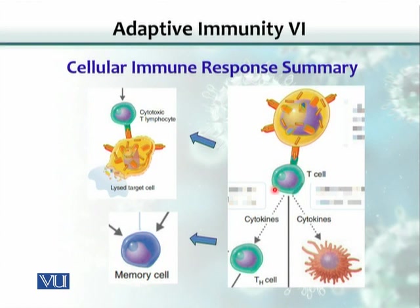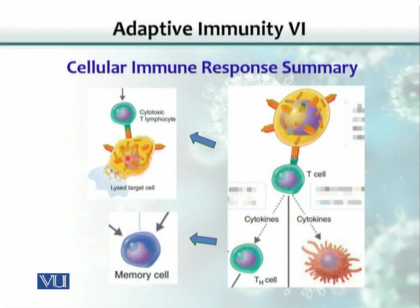There are other consequences of this meeting as well — T cells can also act as helper cells. The T cell that destroys a virally infected target cell is CD8 positive, while helper T cells carry the CD4 molecule. Those CD4 helper T cells can secrete cytokines that activate other cells of the immune system.